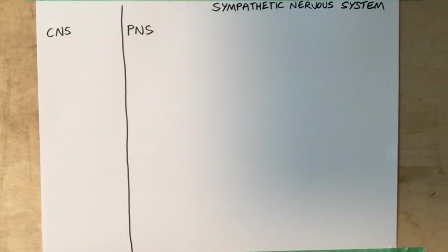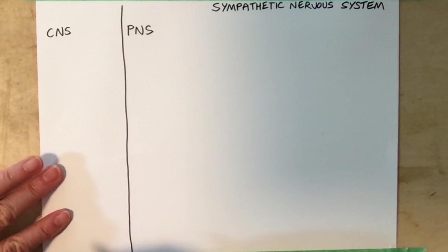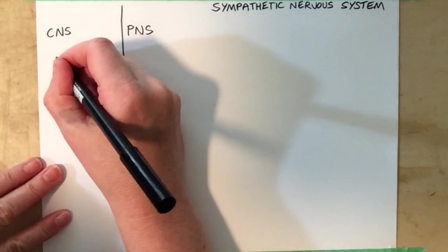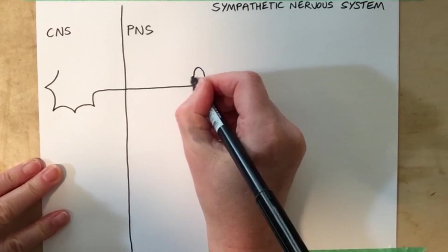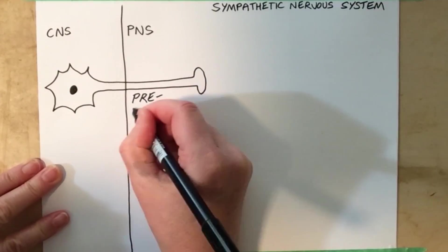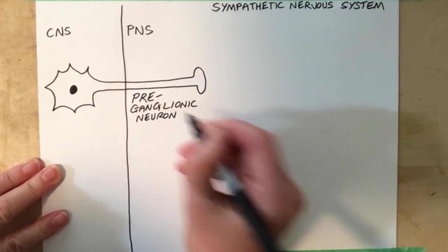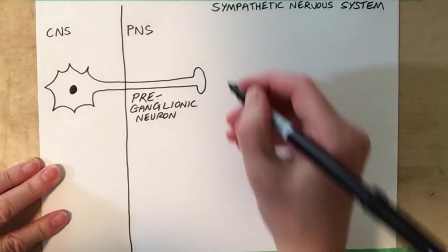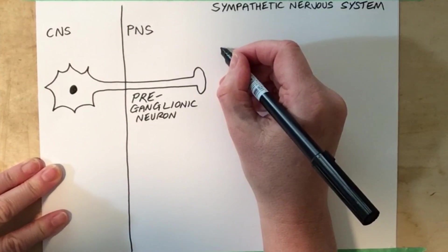Now the motor pathways consist of two neurons end-to-end: the so-called preganglionic neuron, and then the postganglionic neuron.